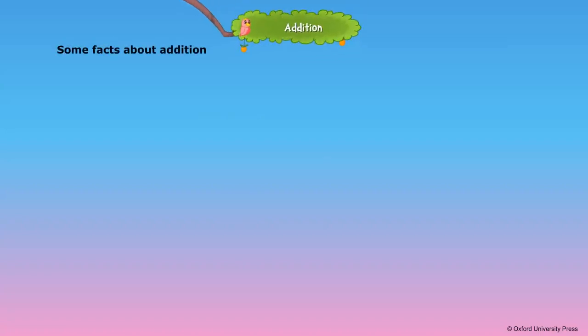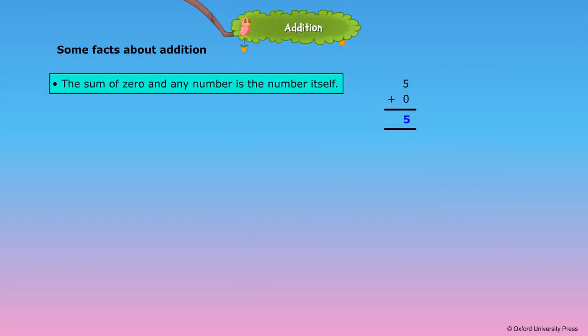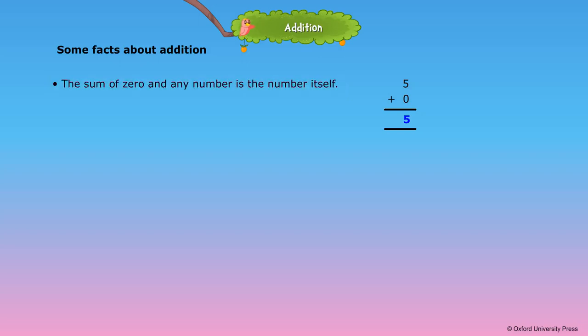Addition. Some facts about addition. The sum of 0 and any number is the number itself. 5 plus 0 is equal to 5.